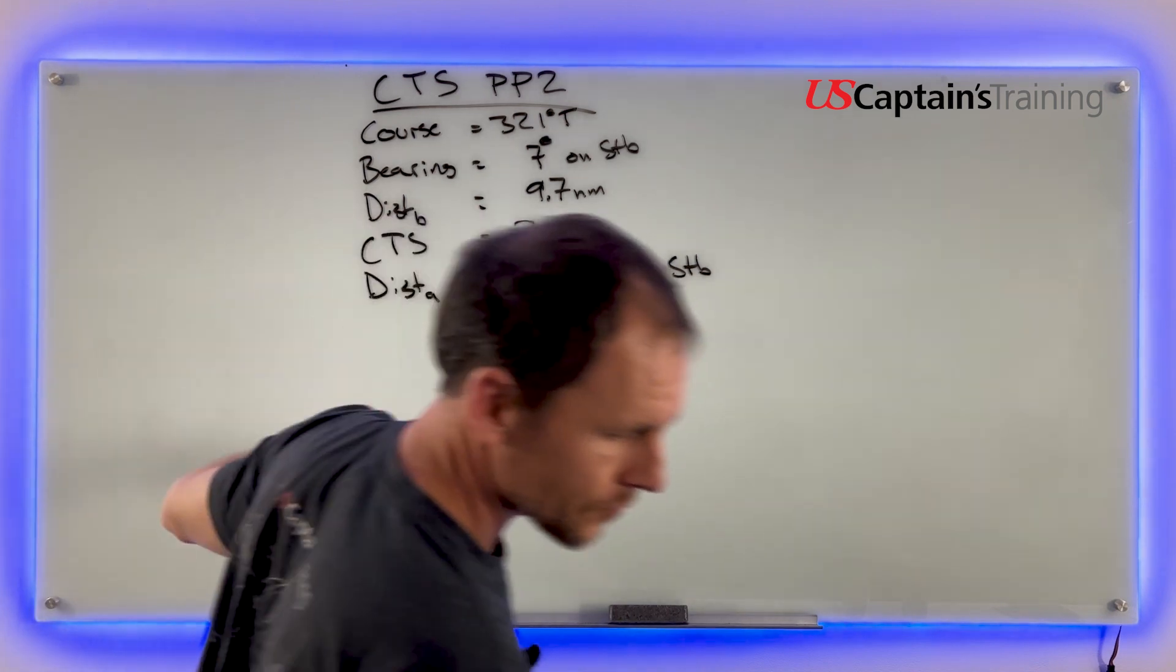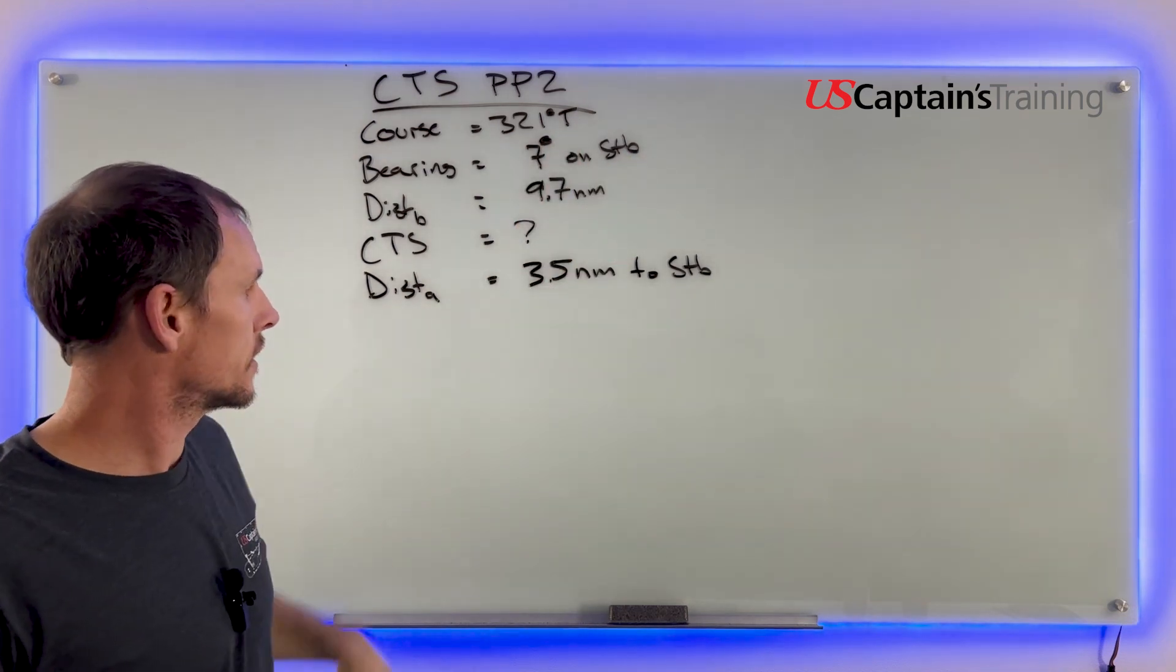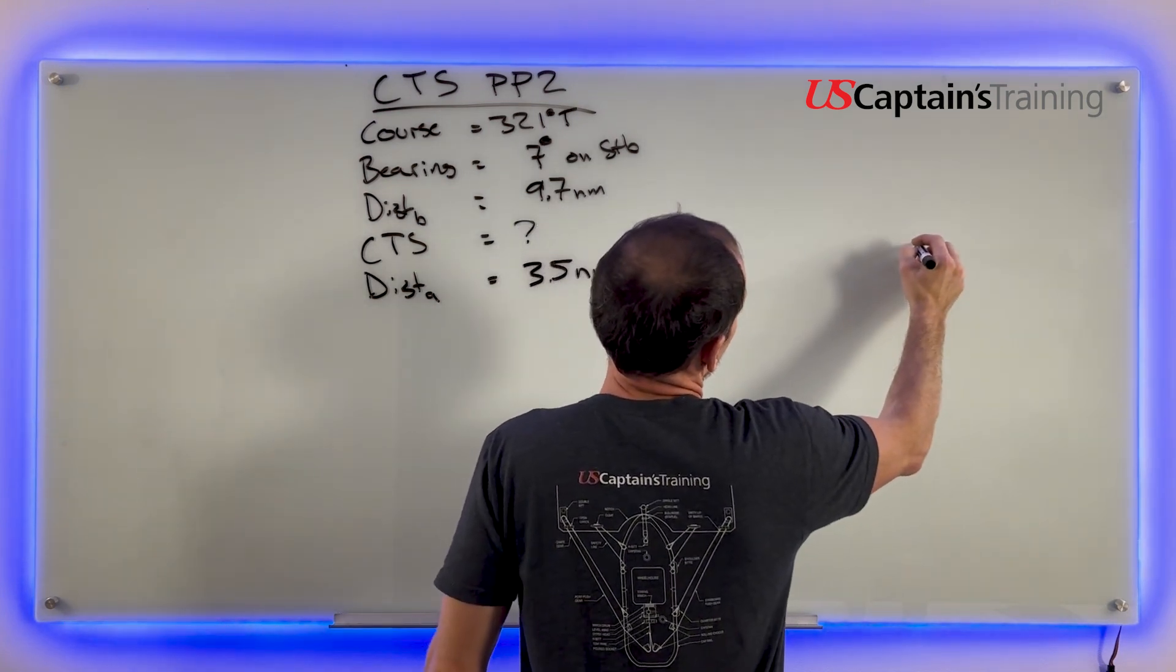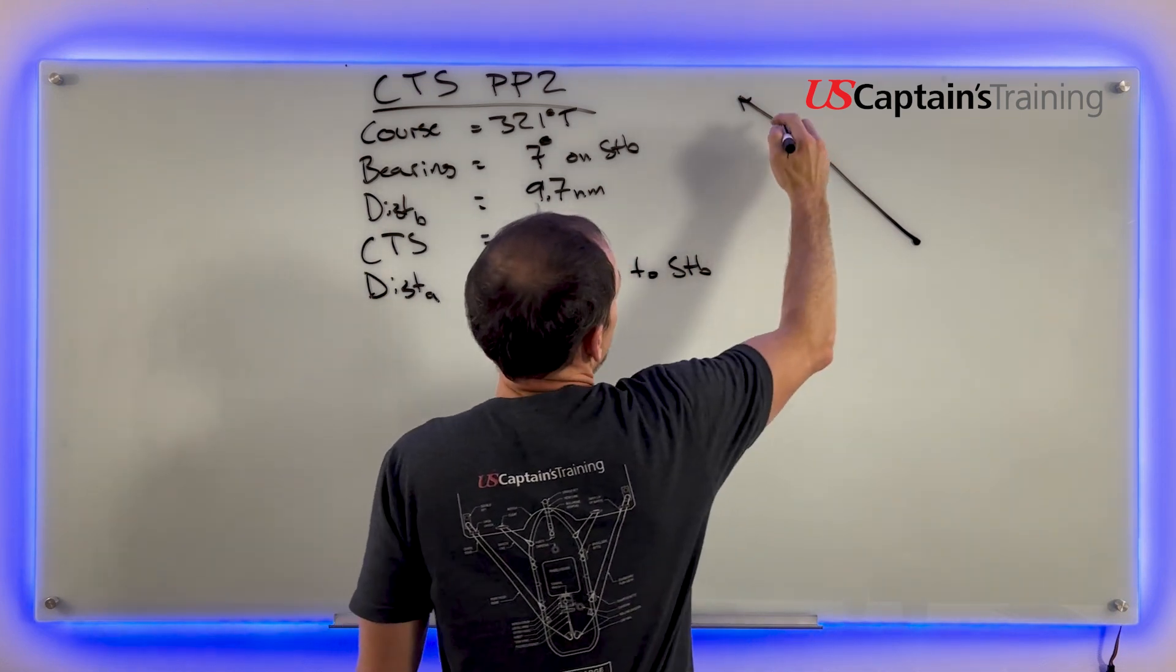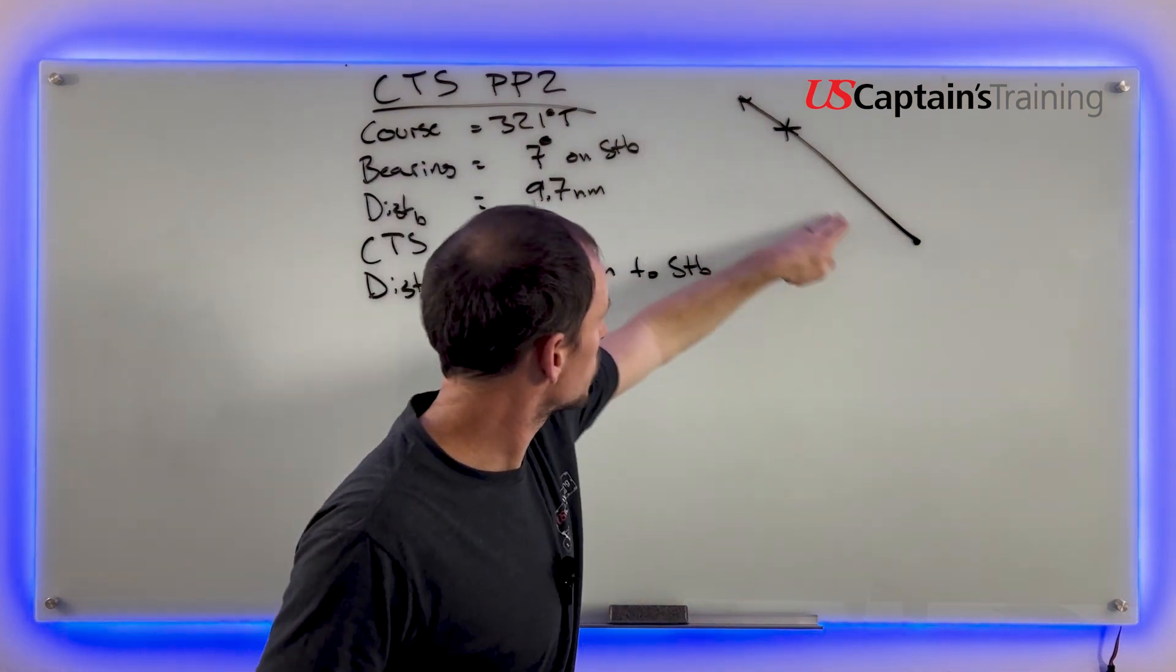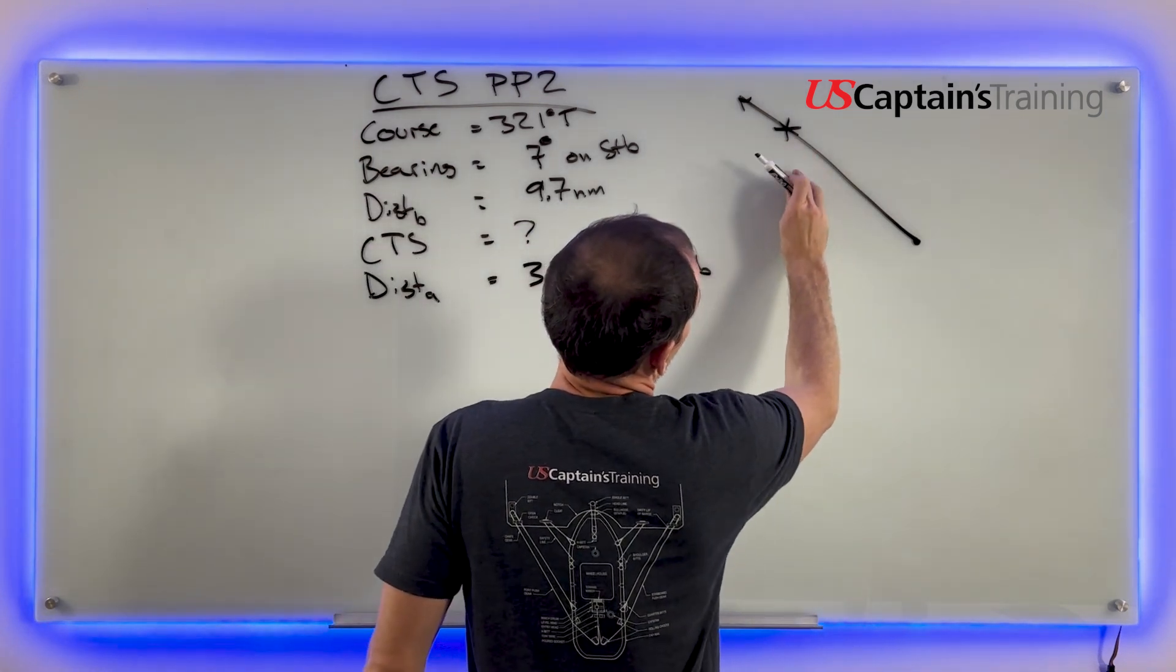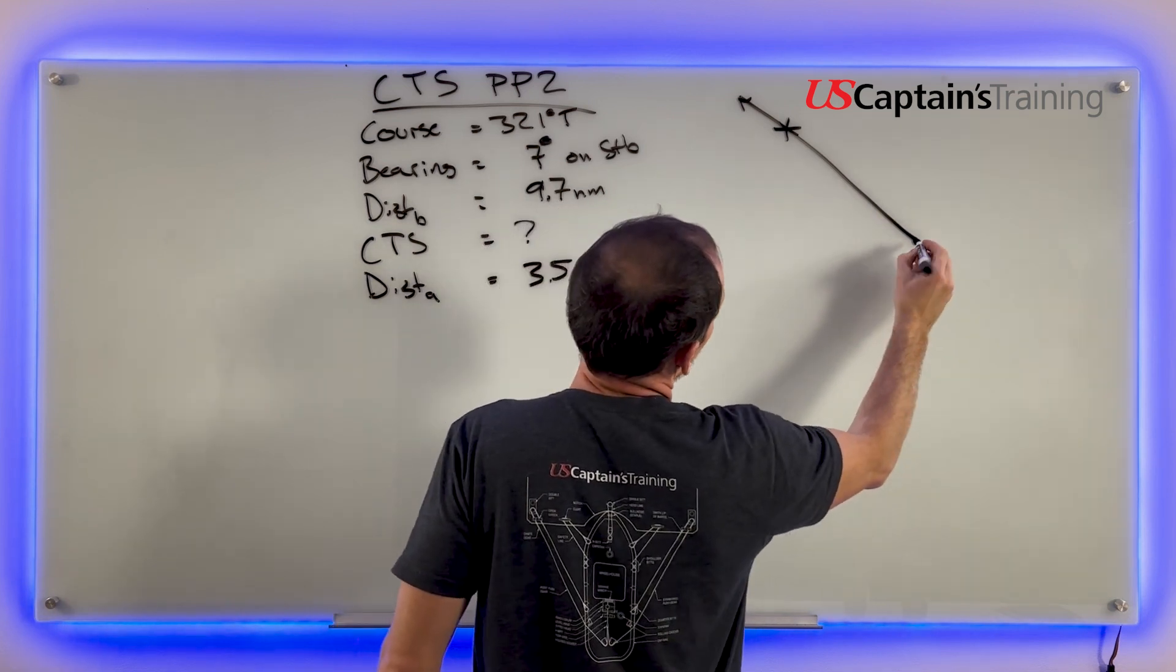Now it wants us to figure out course to steer. We need to take our course, account for the bearing, and then account for this distance to starboard. To do that, we're going to start with a triangle. 321, right? So 90, 180, 270, 321 is somewhere here. We're going to be like 321. This is actually going to be for the bearing. We see that light out here somewhere. So we're seeing that light 9.7 miles away.